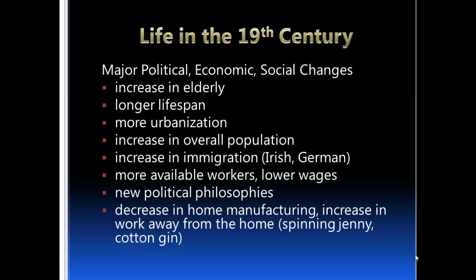As industrialization began to take hold, work began to increase away from the home. The spinning jenny enabled yarn to be formed more readily, leading to clothing manufacturing as an industry. The cotton gin in the South was also invented during this period, enabling cotton to be harvested more efficiently. The combination of the cotton gin and spinning jenny led to increased industrialization and the development of a garment industry.